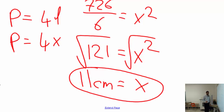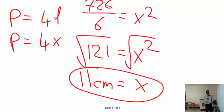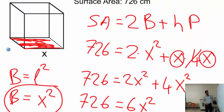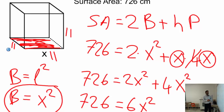Now that we know x equals 11 cm, you can go ahead and calculate the surface area by replacing the numbers. Since it's a cube, all sides are 11 — this side, that side, and the other side are all 11 centimeters.